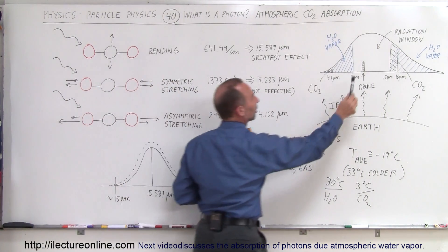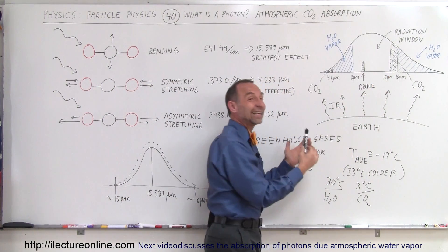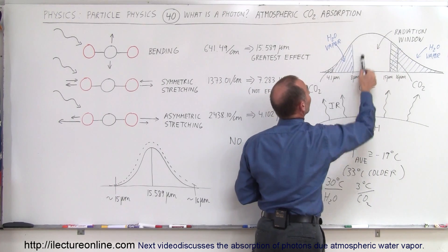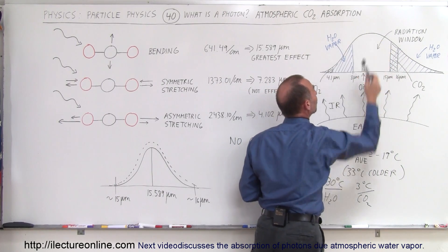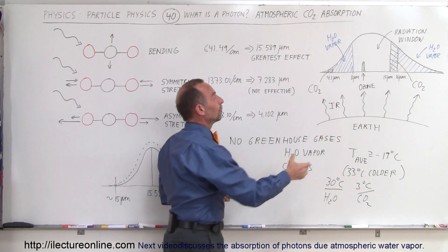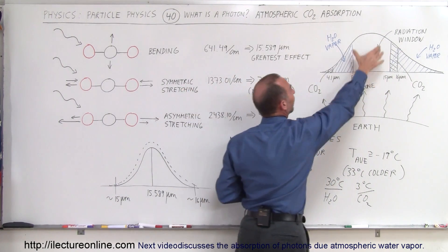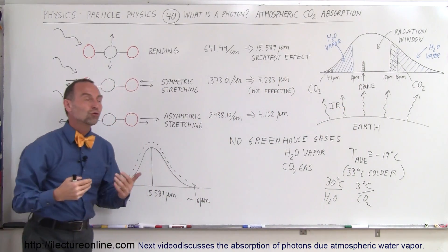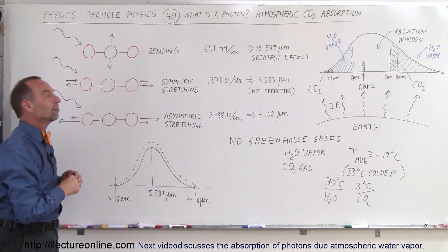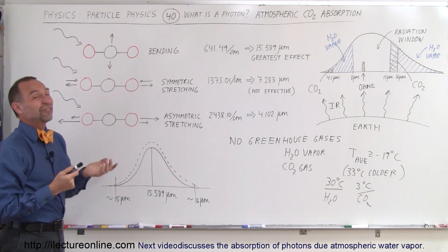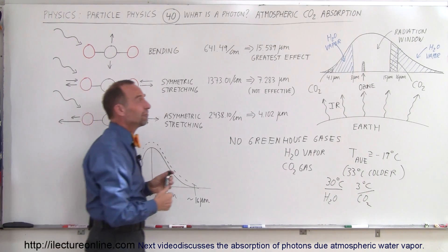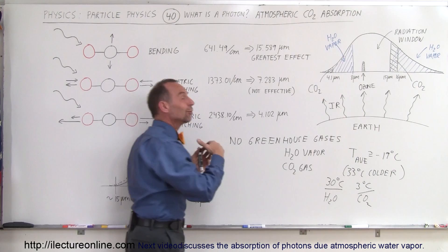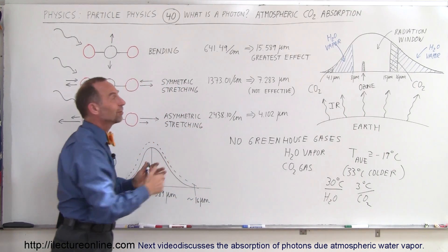As long as we keep this radiation window open — and at this point there is nothing in the atmosphere that would close it — we will continue to radiate energy back into space, and the temperature of the Earth should remain fairly normal and fairly constant. There are other factors that affect the climate a lot more, but that's in climate science, not in the physics science of this matter.